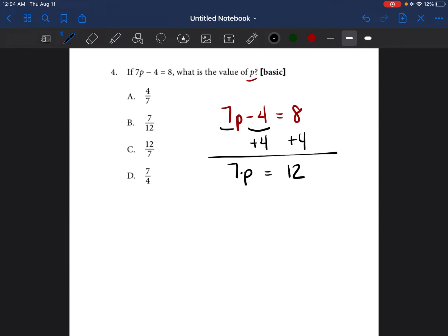So the opposite of multiplication is division. So you divide both sides by seven. The sevens on the left side cancel each other out and you're just left with P. And P is equal to 12 over 7. So the answer would be C.